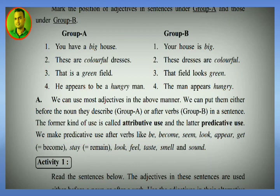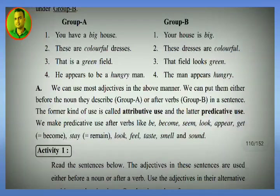Compare with: 'That field looks green.' Here the adjective 'green' comes after the noun 'field'. Number four: 'He appears to be a hungry man' — adjective 'hungry' before noun 'man'. Compare with: 'The man appears hungry' — here 'man' is the noun and 'hungry' is the adjective appearing after the verb.